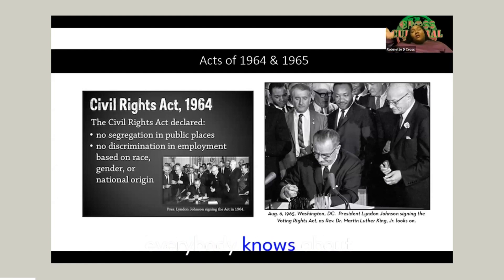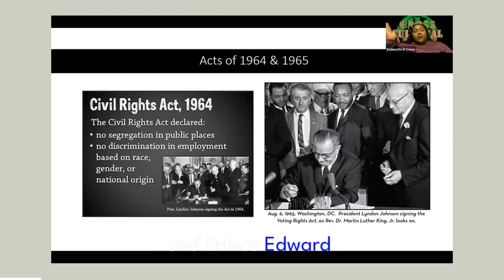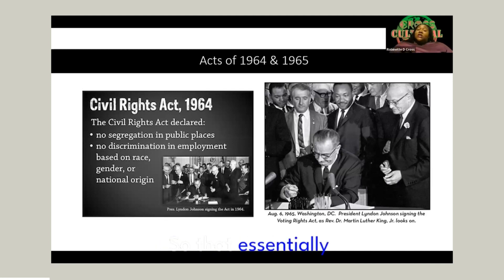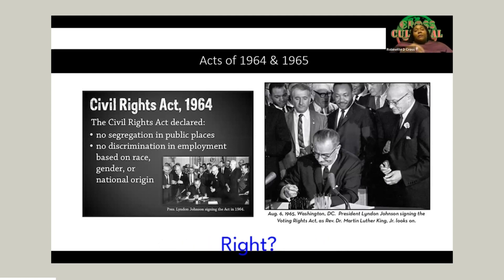For those of you familiar with Black history, everybody knows about Brown v. Board of Education of Topeka, Kansas and Prince Edward County of 1954. That said that schools should not be segregated, which essentially overturned that component of Plessy v. Ferguson — that separate but equal — because we knew that separate was not equal.